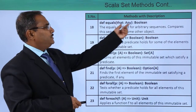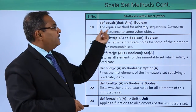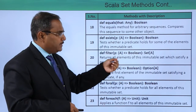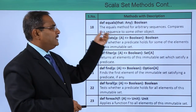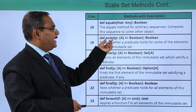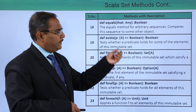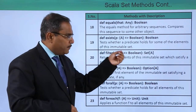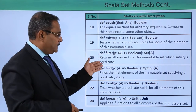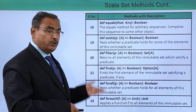We have the equals method, which takes an argument of type Any and returns Boolean. The equals method for arbitrary sequences compares this sequence to another sequence object. We have exists, which returns Boolean — it tests whether a predicate holds for some of the elements of this immutable set. We also have filter, find, forAll, and forEach. You can pause the video and check the respective documentation in front of you.